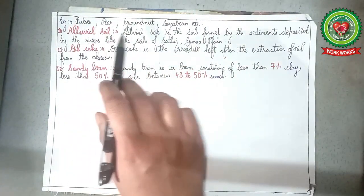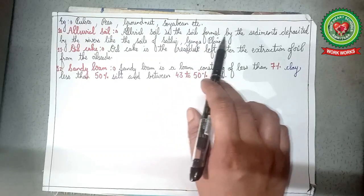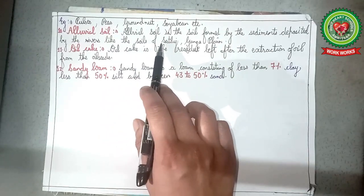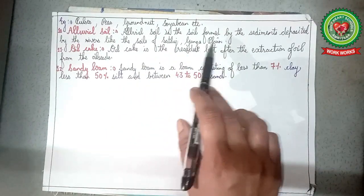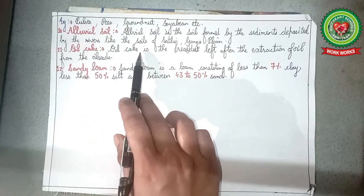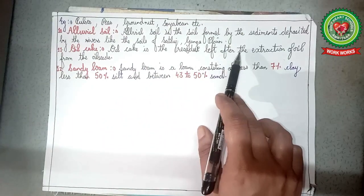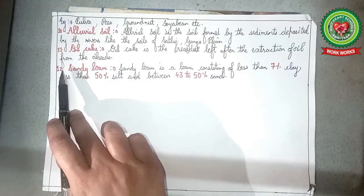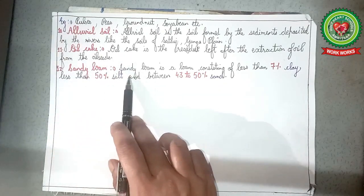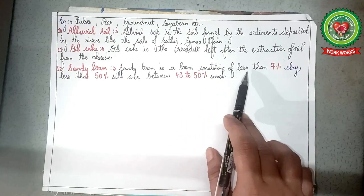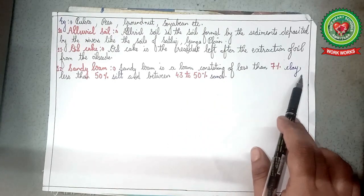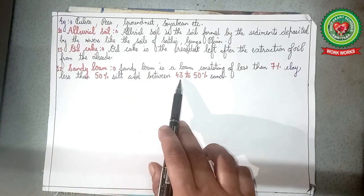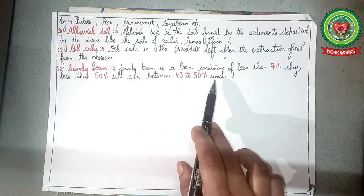Number 10, alluvial soil: the soil formed by sediments deposited by rivers, like the soils of the Satluj-Ganga plains. Number 11, oil cake: the residue left after the extraction of oil from oilseeds. Lastly, sandy loam: a loam consisting of less than 7% clay, less than 50% silt, and between 43 to 50% sand.